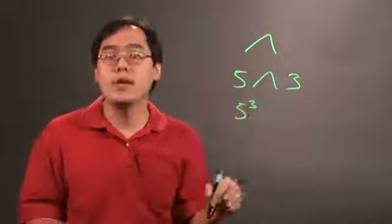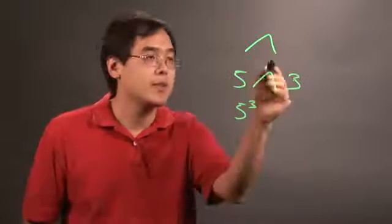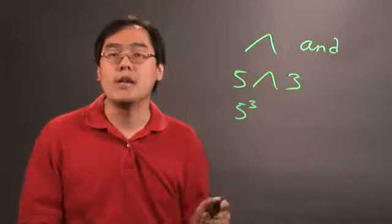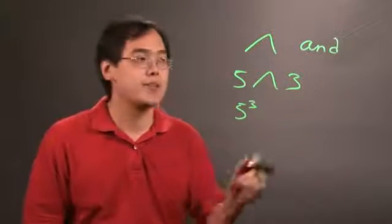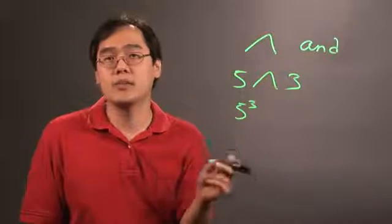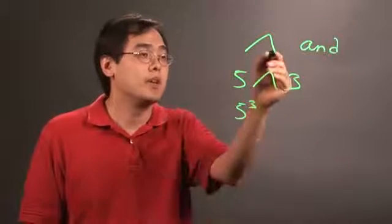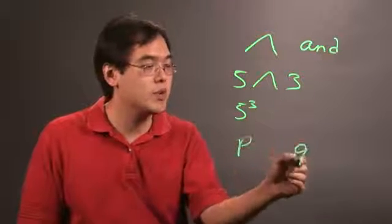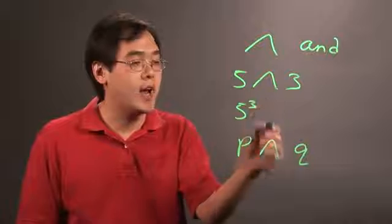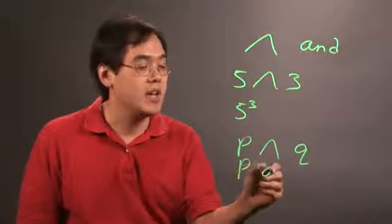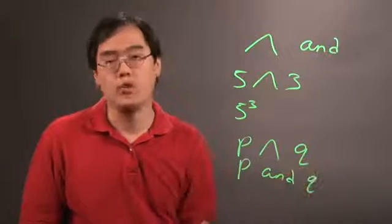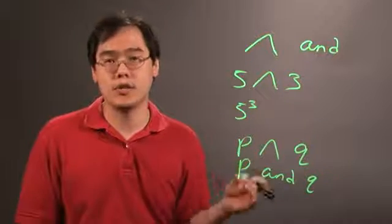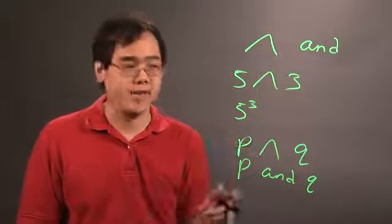That's one way. But in pure math circles, the caret can also be interpreted as the AND symbol. In the logic area of mathematics, the caret is used as the AND symbol to indicate the connection of two statements. So for example, if P was a statement and Q was another statement, P caret Q means P AND Q. It's used in truth tables, logic areas, and also in other areas of math as well.